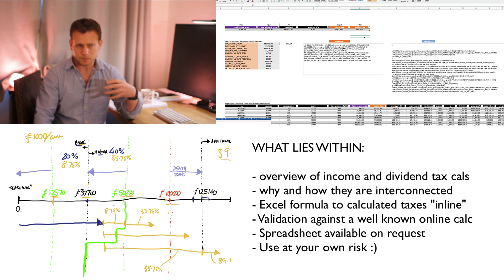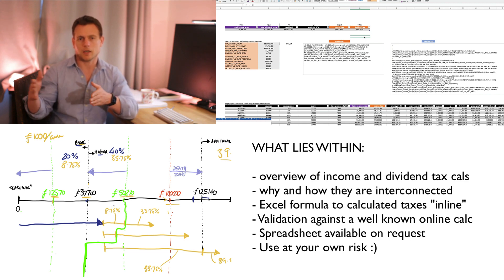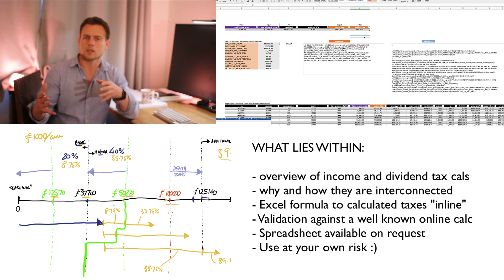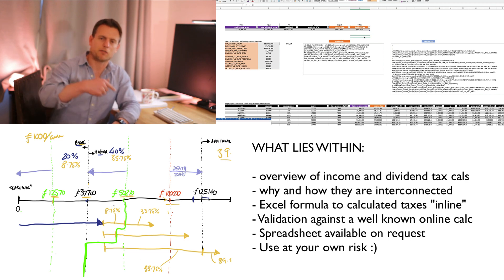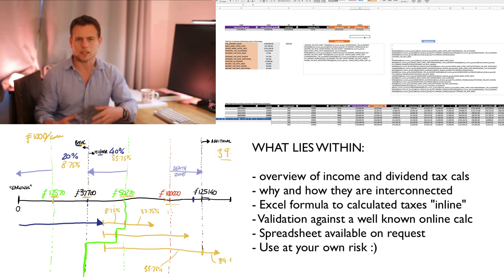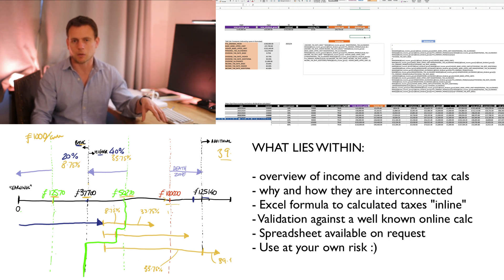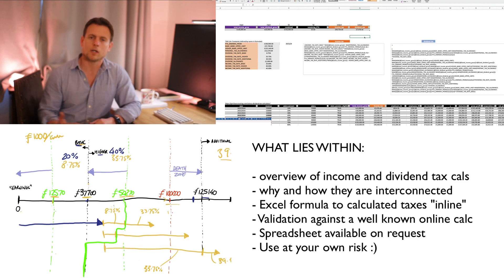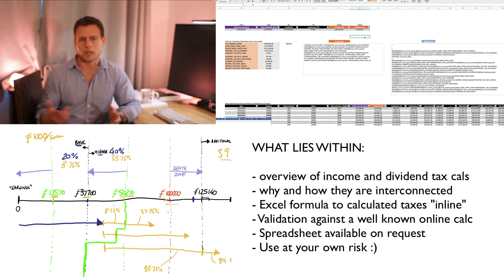The calculations, while fairly straightforward at lower income ranges, get quite complicated in higher tax brackets due to personal tax allowances and dividend allowances. The dividend income and earned income together affect each other — dividend income affects the income tax you pay, and your income also affects the dividend tax you pay. I'll explain how it works now; if you're already familiar, skip ahead to the Excel chapter.